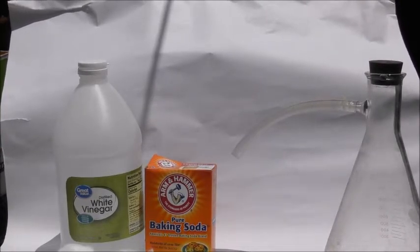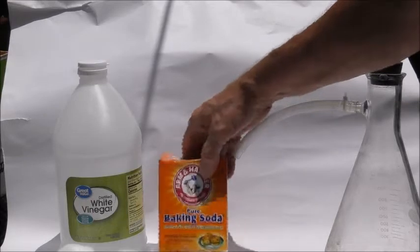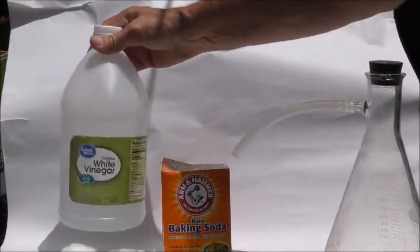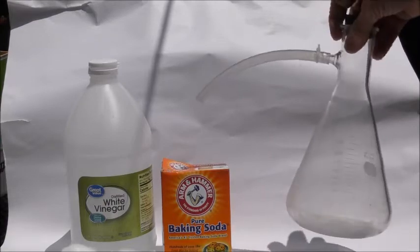One can make a fly anesthesia device with CO2 by using baking soda and household vinegar, and then either a contraption like this that you can get from your chemistry lab.